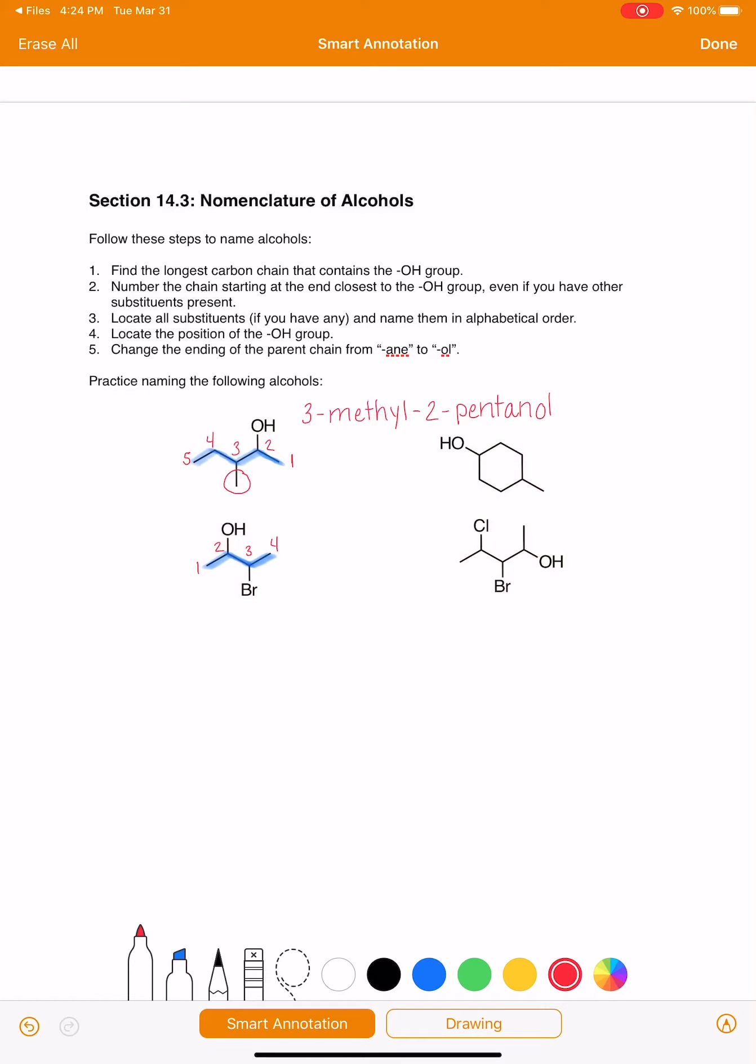Locate your substituent. Your substituent is this guy right here. He's on carbon number three and his name is bromo. Now locate the alcohol, which is on carbon number two. Name the parent chain. It's a four carbon chain, so it's a butane, but we drop the E and say butanol to let everybody know that it's an alcohol.